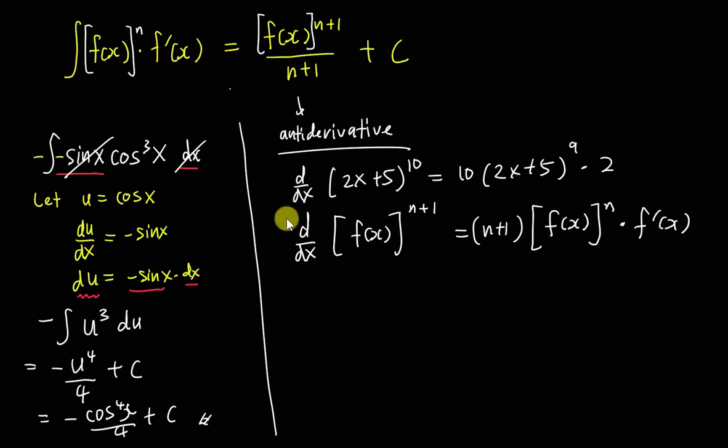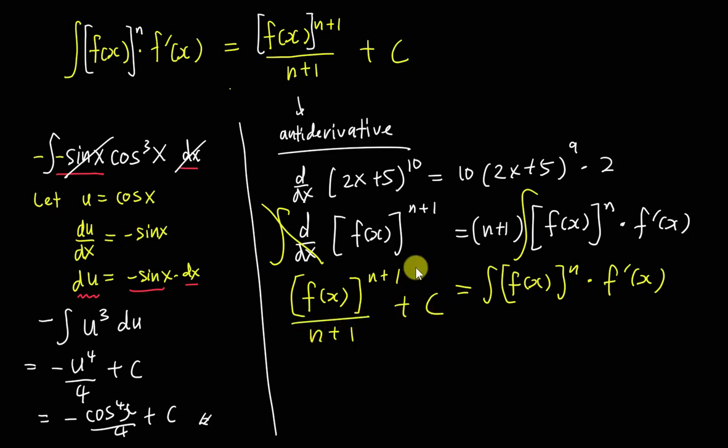Then what I will do here is I will add the integration sign for both sides. Then I know if I integrate f(x) to the power of n multiplied with f'(x), I actually get f(x) to the power of n+1. The n+1 here moves to the other side, divide by n+1 plus C. This is exactly the same formula I got here.